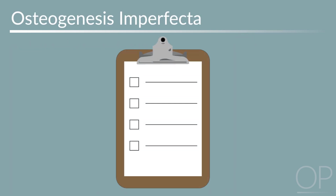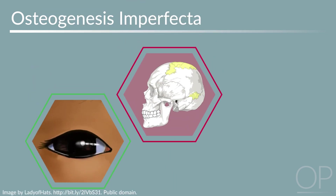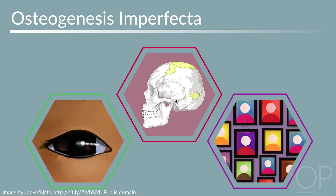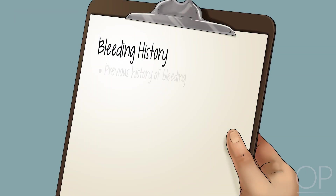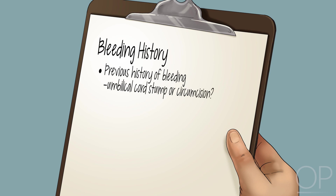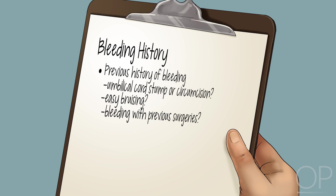For osteogenesis imperfecta, you should evaluate for features such as blue sclera, wormian bones or irregular bones within the cranial suture, and a positive family history. For children presenting with bruising, the differential also includes a bleeding disorder. You should therefore ask whether the child has any previous history of bleeding from the umbilical cord stump or circumcision procedure, easy bruising, or bleeding with previous surgeries, as well as conduct a detailed family history to assess for bleeding problems.